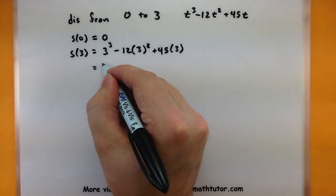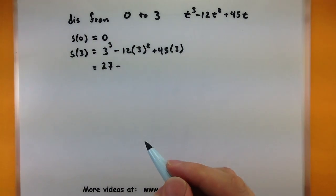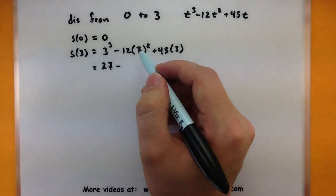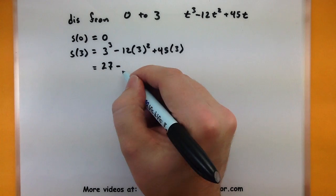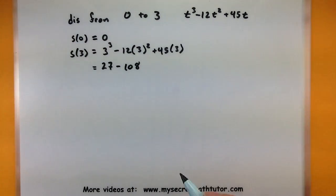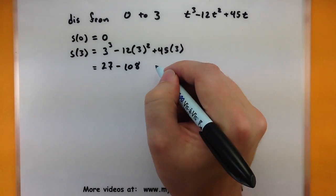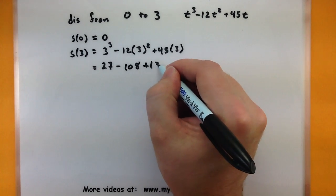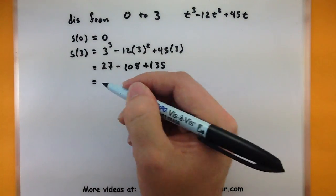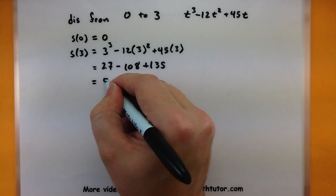Alright, let's see. Some of these simplify. So 3 cubed minus 3 times 3 squared, so that would be 12 times 9, 108. And 45 times 3 would be plus 135. So its position now is at 54 meters.